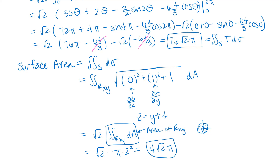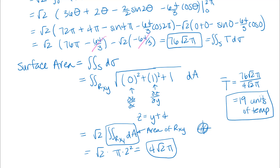So T-bar equals the total temperature integral on the surface divided by the surface area, giving us 19 (whatever the units of temperature are — none were given). This problem leverages a lot of material from throughout the semester, making it a good review. In the next example, we'll do almost the same problem but using a parameterized surface.